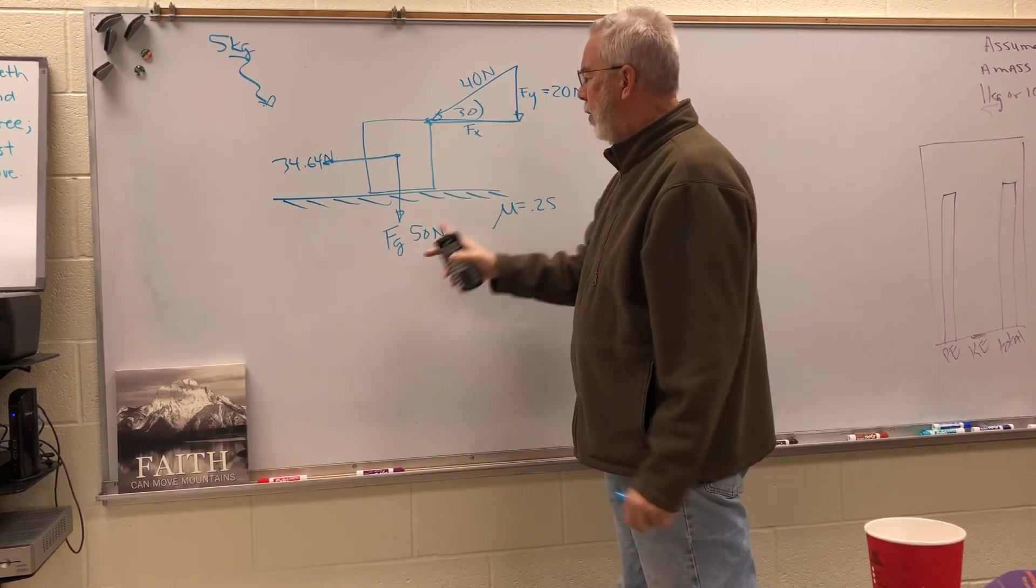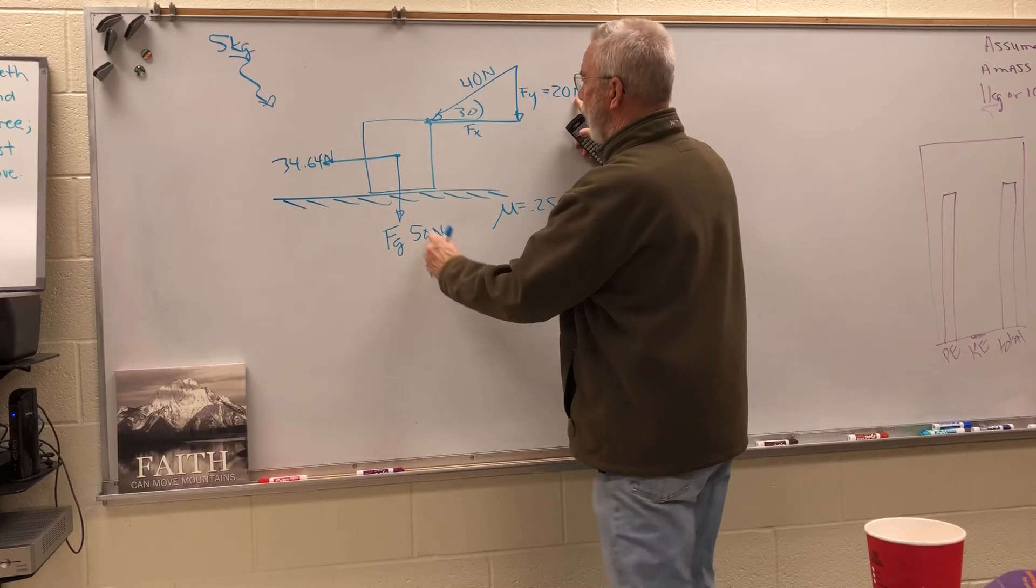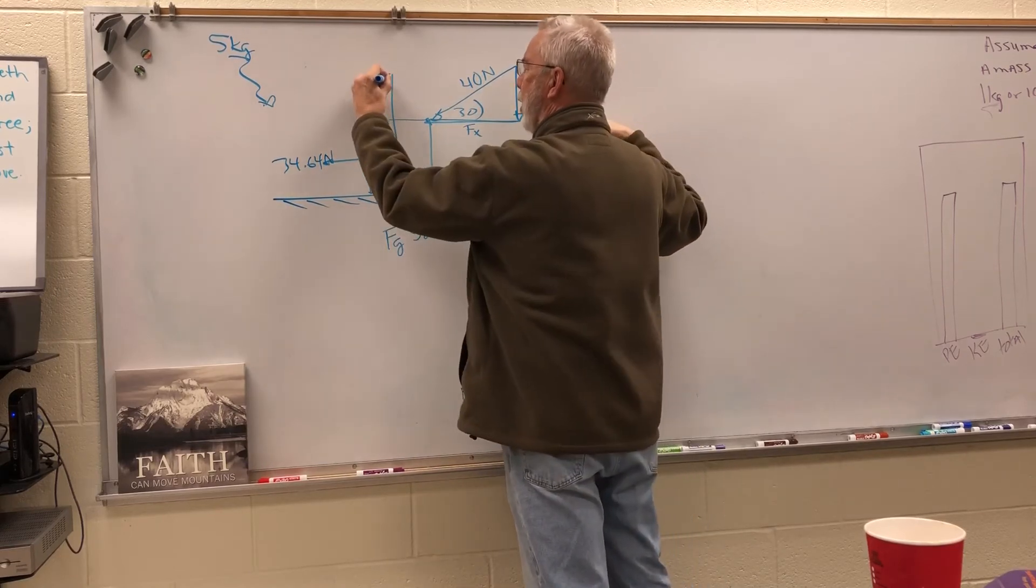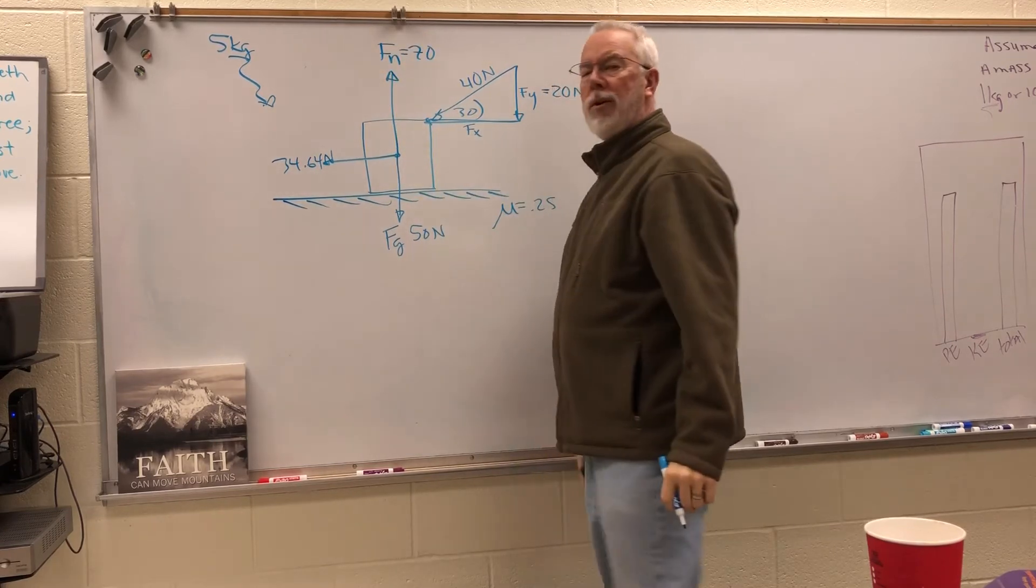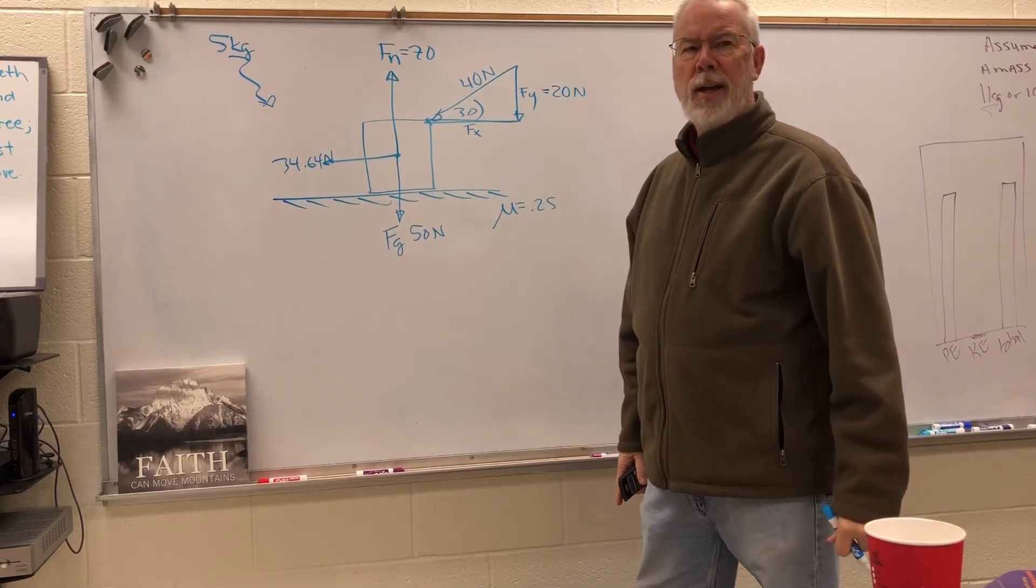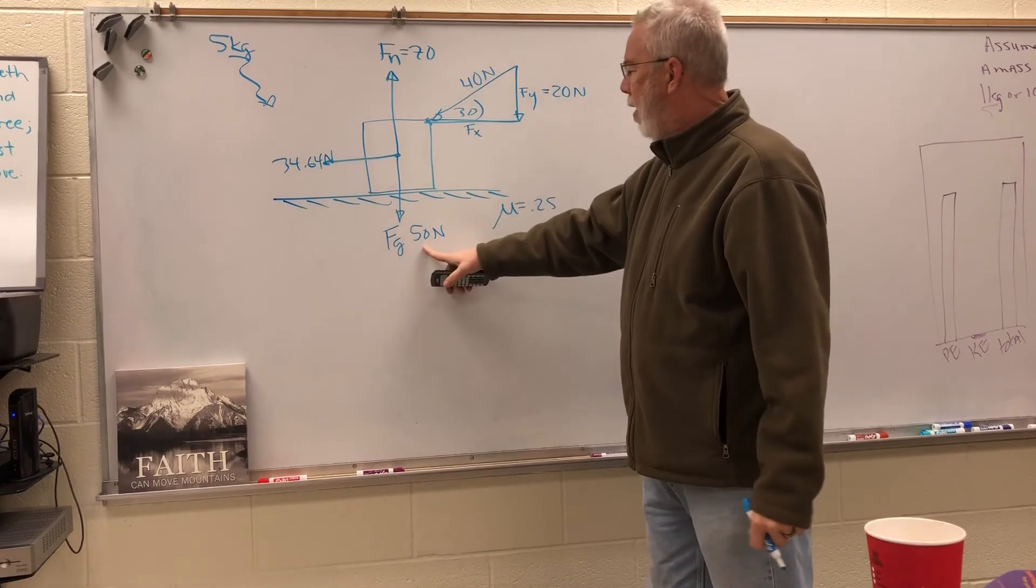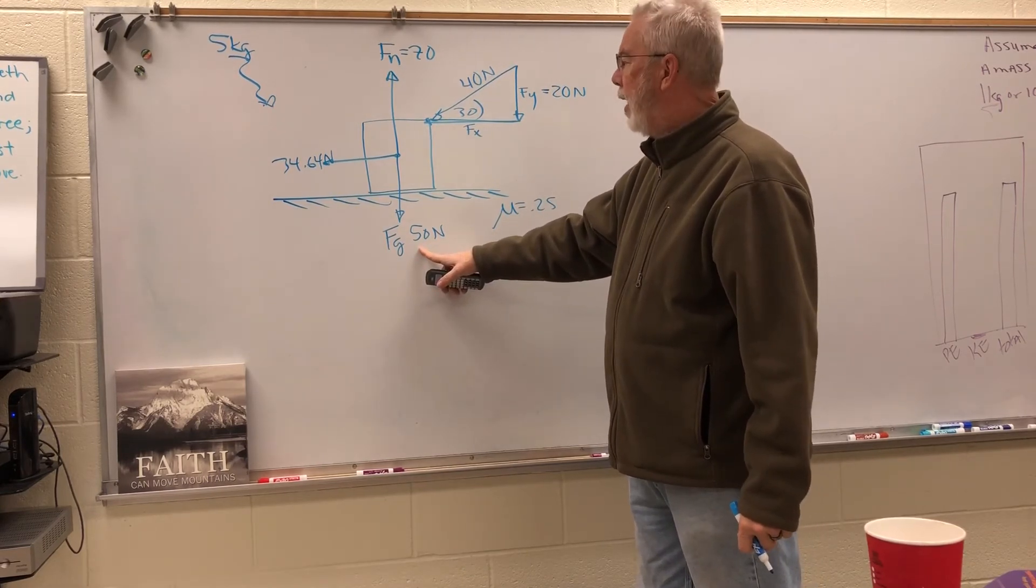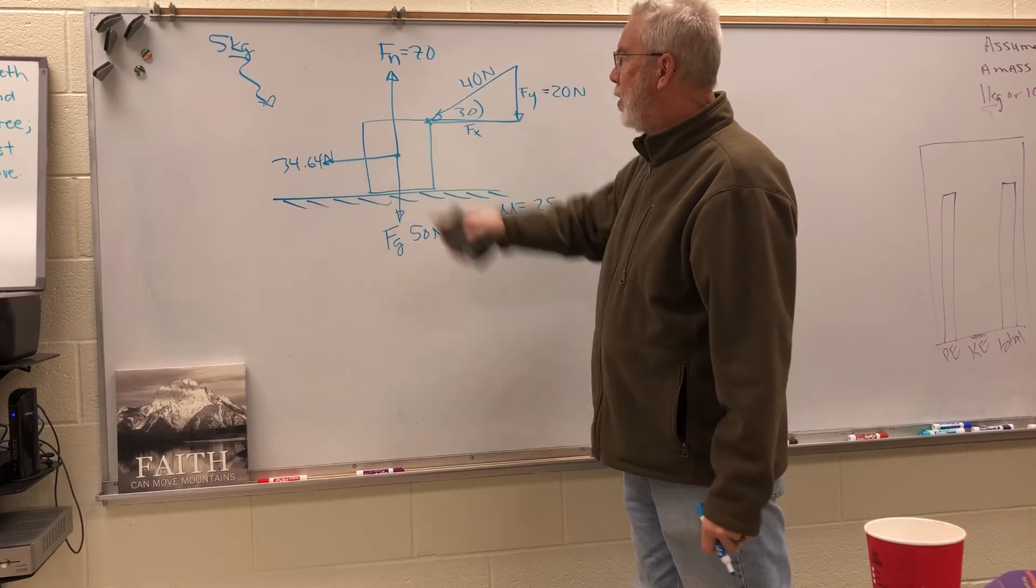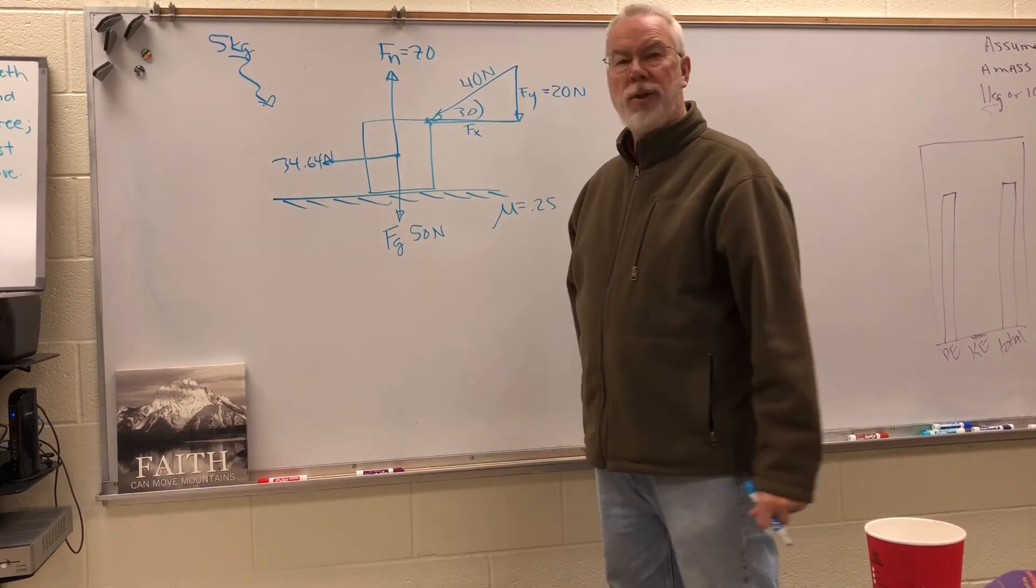So we're pushing down on the box and the box is pushing down on the table. These two downward forces have to balance the upward force, so the normal force is going to be 70. Does everybody understand why I did that? Down and down together, they're in the same direction, so we add that 70 in the down direction so we have to have a normal force that's pushing in the up direction of 70 also.